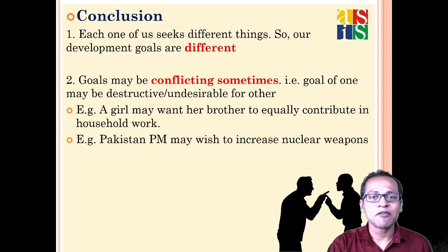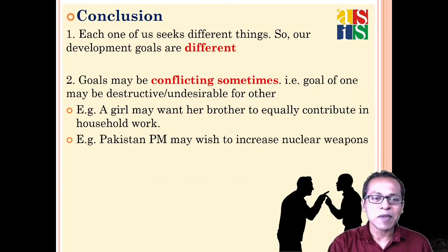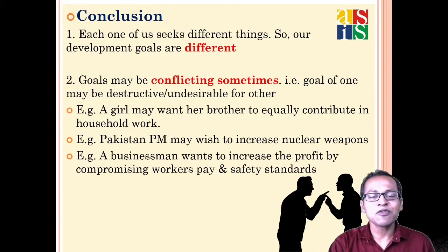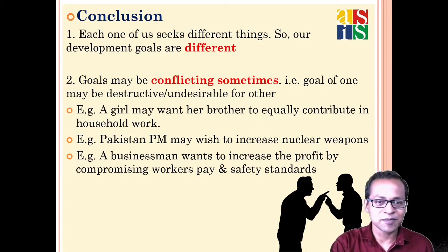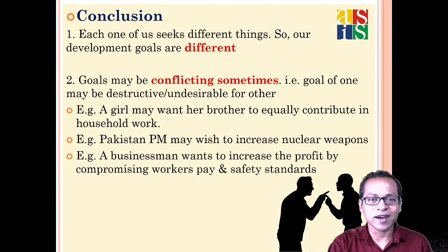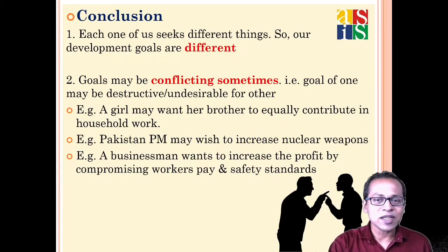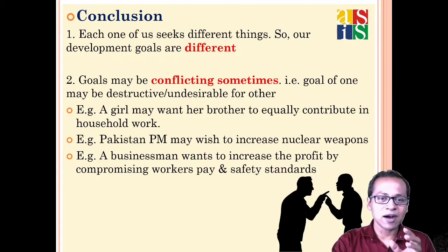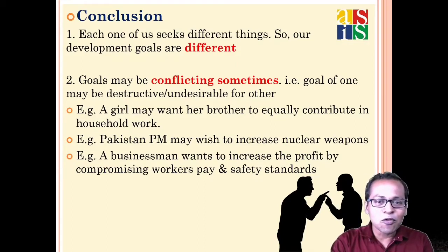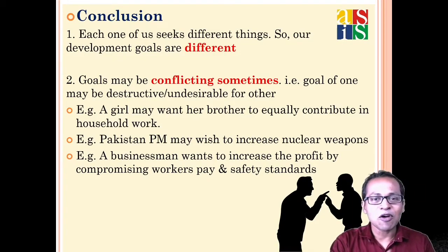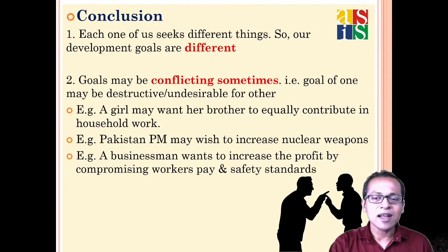Another example: Pakistan wants to increase nuclear weapons, which might be good for them but is not good for neighboring countries. Similarly, North Korea is investing heavily in nuclear technology, which conflicts with the goals of many others.